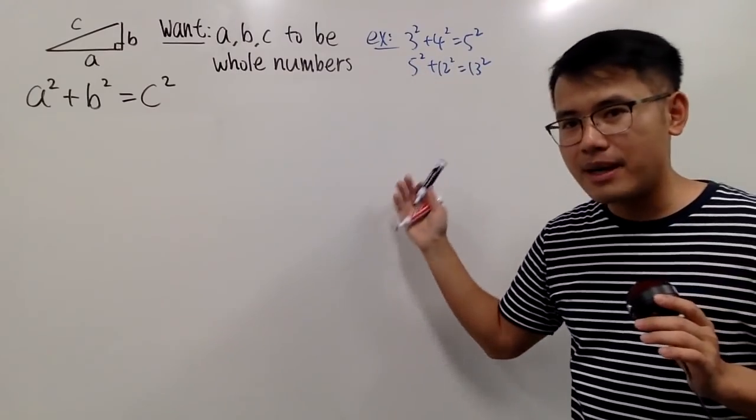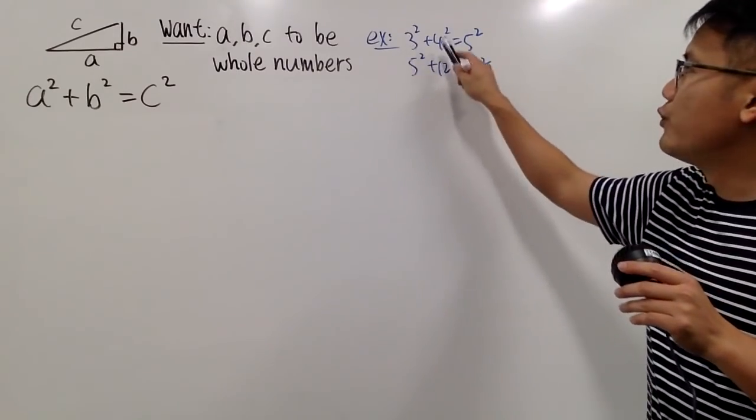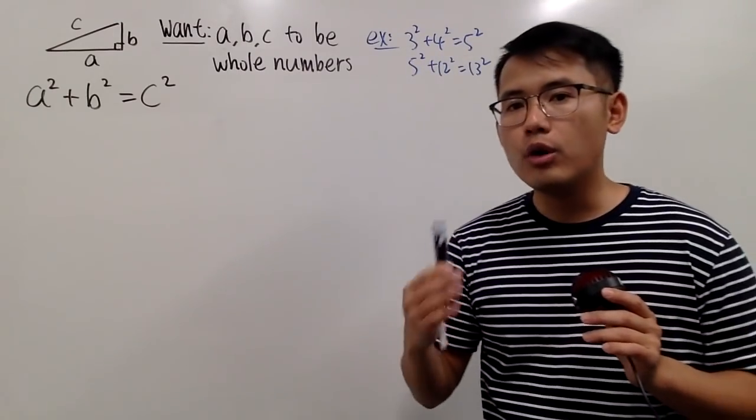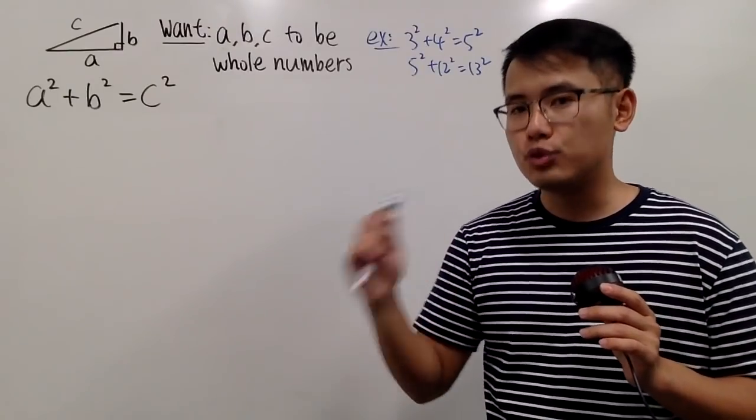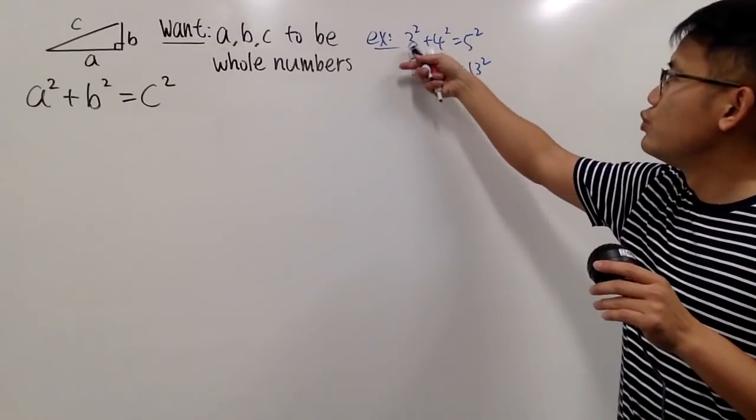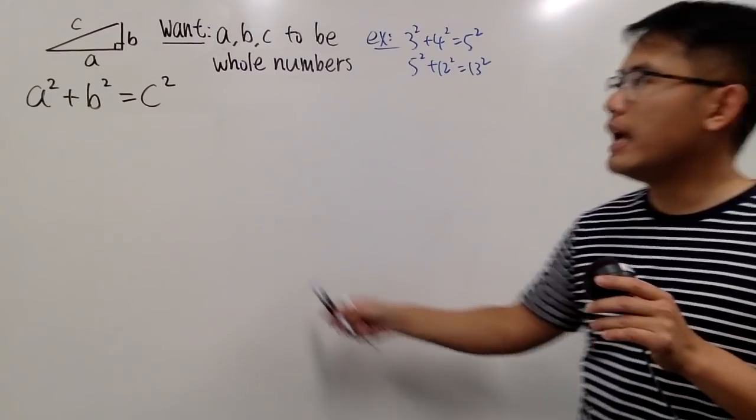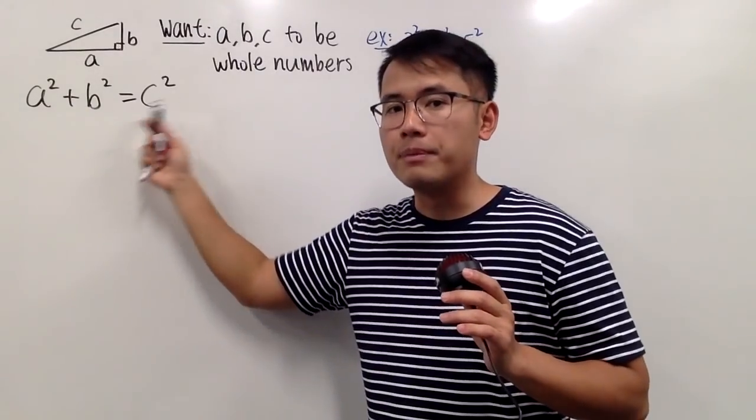Whenever these kind of things happen, we say that 3, 4, 5 is an example of what we call the Pythagorean triple. Because 3, 4, 5, they are all whole numbers, and they satisfy the Pythagorean theorem.